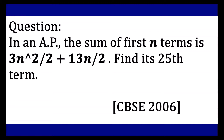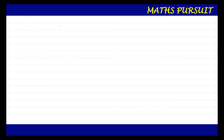What is being given in the question? The question says that in an AP, the sum of the first n terms — represented by Sn — is equal to 3n² upon 2 plus 13n upon 2. This is what is being given in the question.